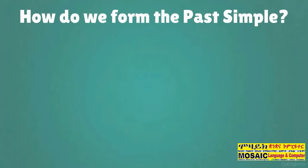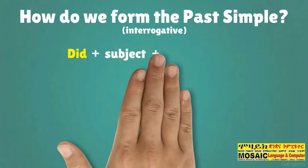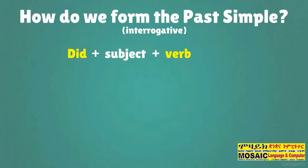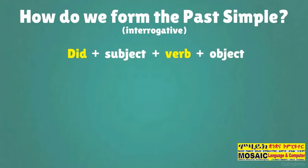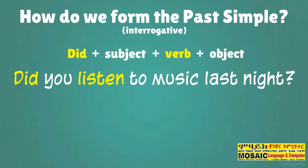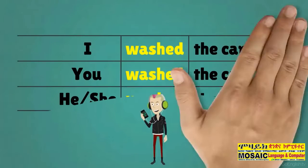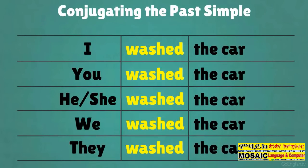How do we form the past simple interrogative? Did plus subject plus verb plus object. Did you listen to music last night? Conjugating the past simple interrogative.